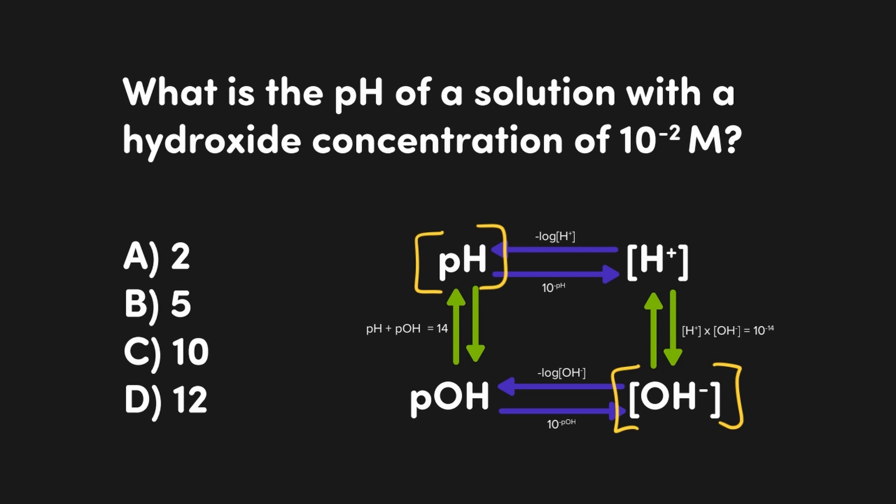If we follow our arrows and go through as many p-values as possible, this would end up being conversion from hydroxide to pOH to pH. Taking the negative log of 10 to the negative 2, giving us a pOH of 2, which can be converted into a pH of 12.